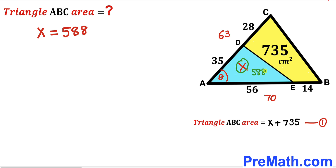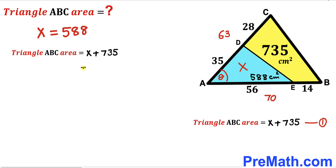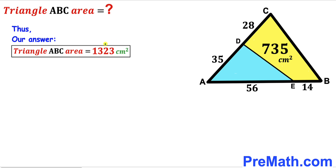So the area of the blue shaded triangle ADE is 588 centimeter square. For the final step, recalling equation one: area of triangle ABC = x + 735 = 588 + 735 = 1323 centimeter square. After all the calculations, the area of the big triangle ABC is 1323 centimeter square.